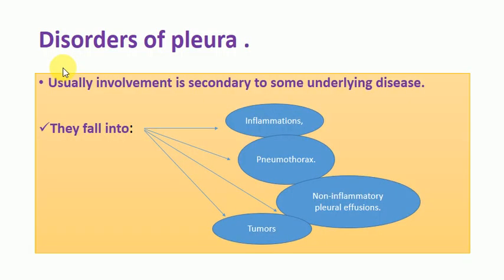The diseases that affect the pleura are divided into several groups: inflammatory diseases, pneumothorax, non-inflammatory diseases, and tumors. This session will be divided into three parts — inflammatory, non-inflammatory, and tumors. An important concept is that diseases affecting the pleura are usually secondary, meaning they arise due to some underlying disease affecting the lungs.